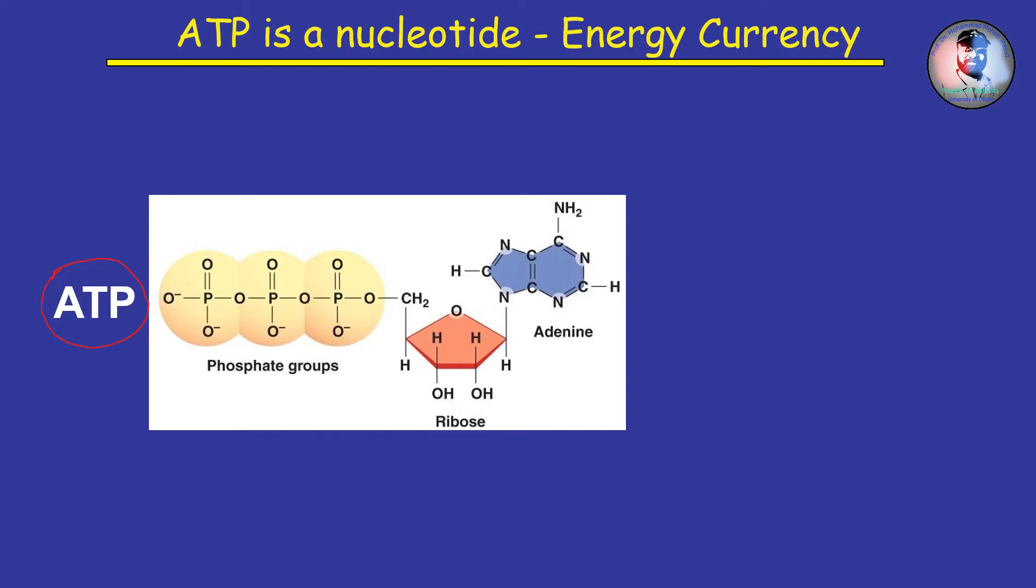ATP is a nucleotide that consists of three main structures: the nitrogenous base adenine, the pentose sugar ribose, and a chain of three phosphate groups bound to ribose. The phosphate tail of ATP is the actual power source which the cell taps. Available energy is contained in the bonds between the phosphates and is released when they are broken.